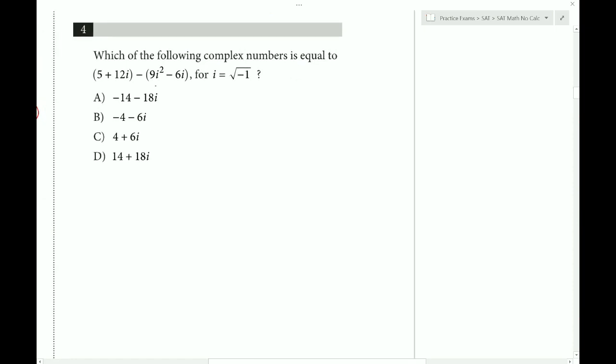Which of the following complex numbers is equal to this? We have 5 plus 12i, and then we have minus, we have to distribute that. So it's minus 9i squared and it's also plus 6i. So right away we could combine these two, that makes 18i. Now we have to remember that since i is radical minus 1, if we square both sides, we get that i squared is equal to minus 1. Because the radical and the square cancel. So wherever we see i squared, we can plug in a minus 1. So that's minus 9 times minus 1, which is of course positive 9. And then we could combine these, and that makes 14 plus 18i, choice D.